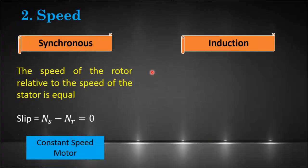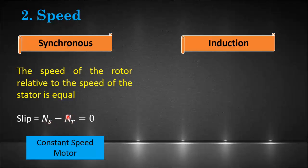Another difference is based on the speed of the motor. In a synchronous motor, the speed of the rotor is equal to the speed of rotation of the magnetic field produced in the stator. The synchronous speed equals the rotor mechanical speed, so the net slip — the difference between the two speeds — is equal to zero. The synchronous motor is also called the constant speed motor.